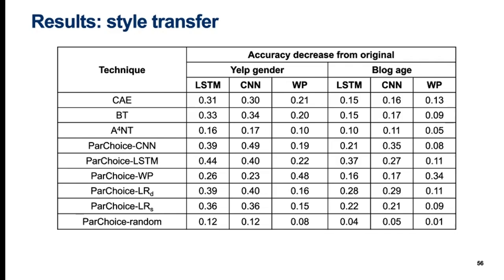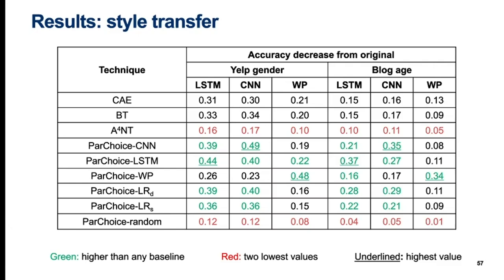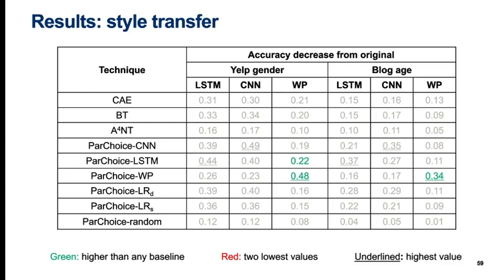This slide shows the accuracy decreases with each profiler and each style transfer technique on the two larger datasets, Yelp gender and blog age. ParChoice random, which performed no targeted paraphrase selection, always had the lowest score. If ParChoice random is discarded, the lowest performance was always obtained by A4NT, shown here in red. In green we show those ParChoice results that exceed all three baselines. In the deep learning classifiers, all variants of ParChoice except random and WritePrints always exceed all baselines. The highest results are obtained with query access to the profiler. Query access to WritePrints always gives ParChoice the best performance on the WritePrints classifier, and in Yelp gender the ParChoice LSTM variant also outperforms all baselines.